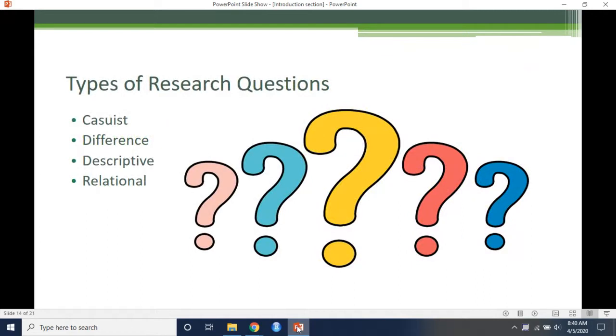There are four general conceptualizations of a research problem in the social sciences. Casualist research problem: this type of problem relates to the determination of right and wrong in questions of conduct or conscience by analyzing moral dilemmas through the application of general rules and the careful distinction of special cases. Difference research problem typically asks the question, is there a difference between two or more groups or treatments? This type of problem statement is used when the researcher compares or contrasts two or more phenomena.